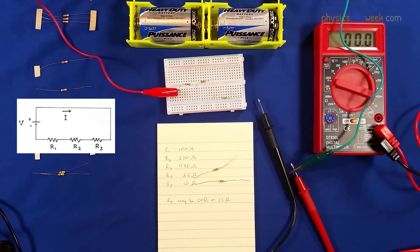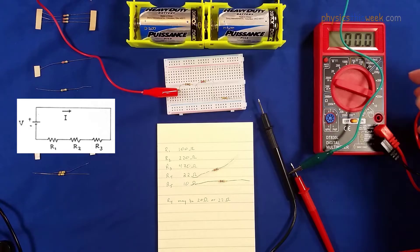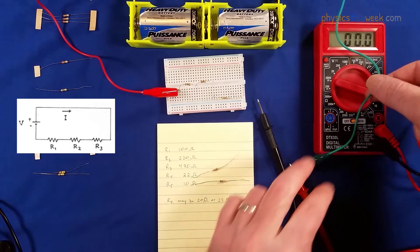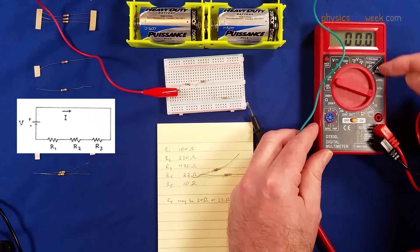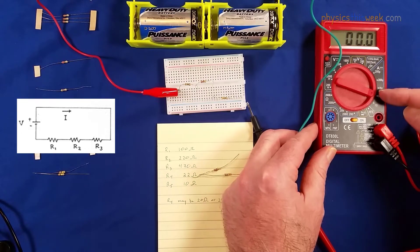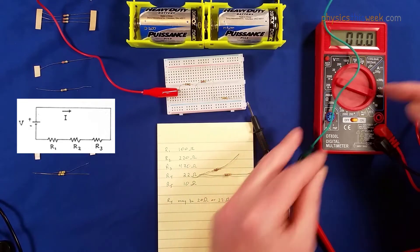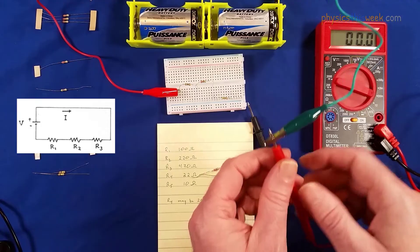Okay, so now we're set up to measure the currents that are going through here. So for currents, we want to make sure that we're in the ammeter section.